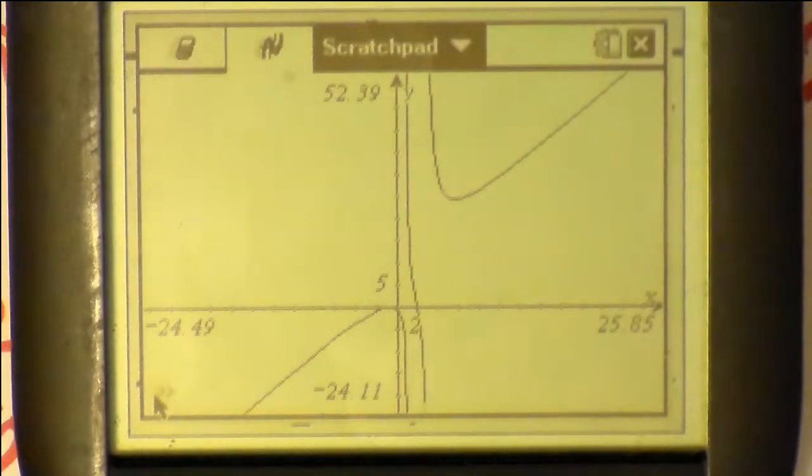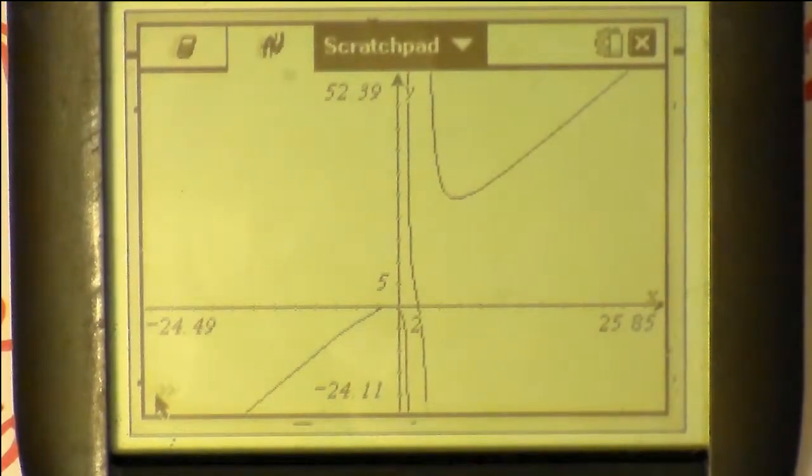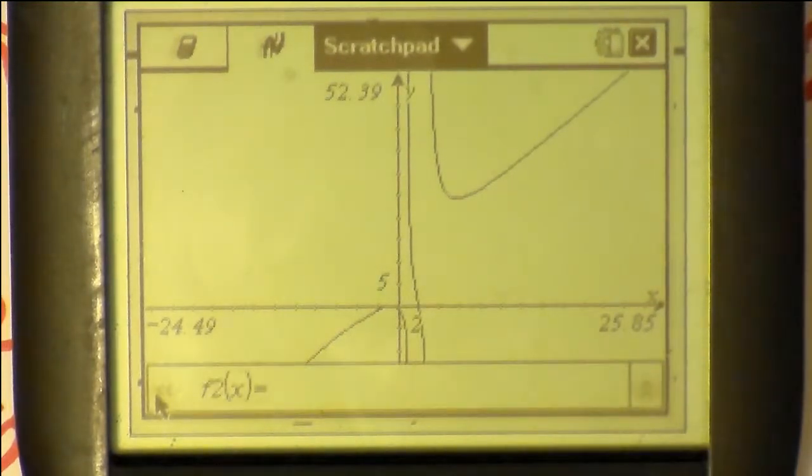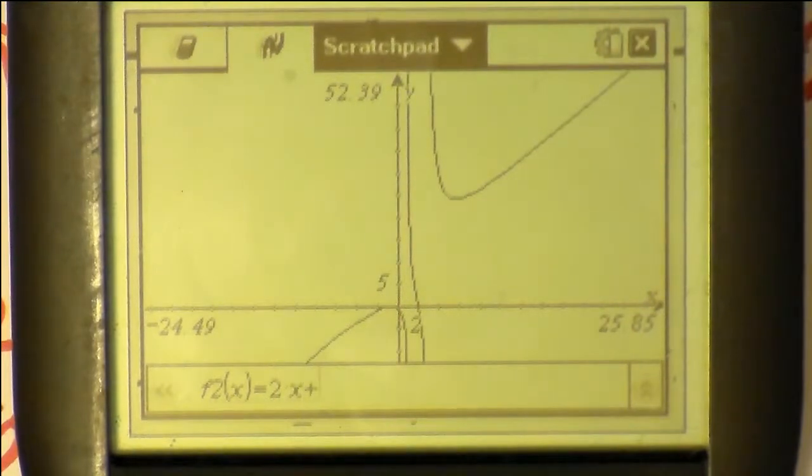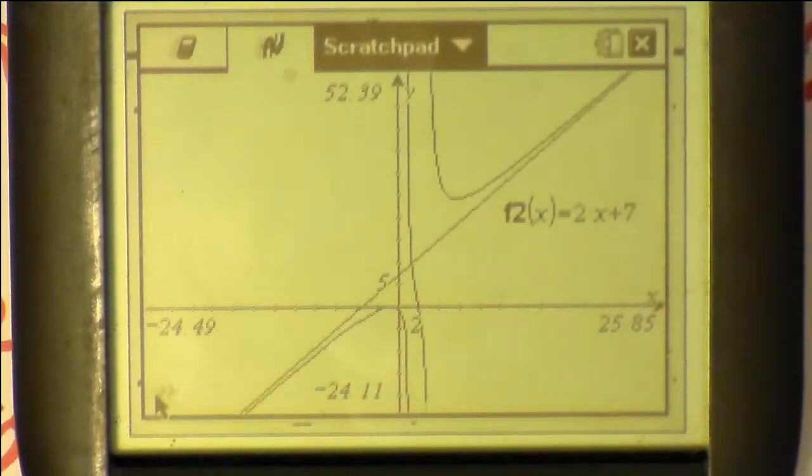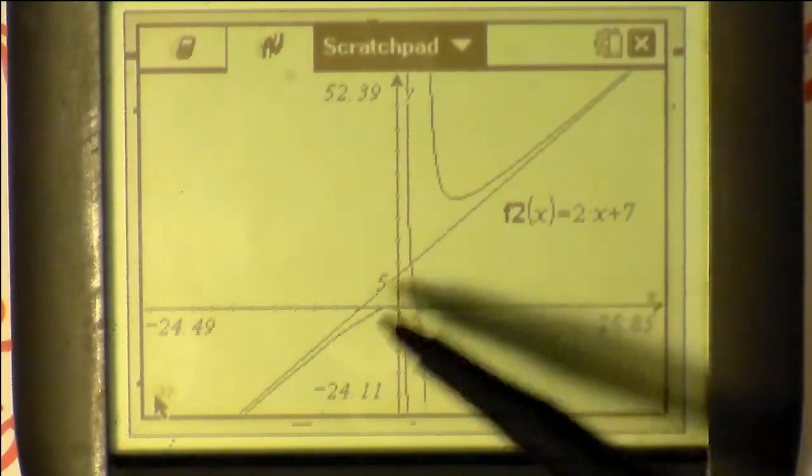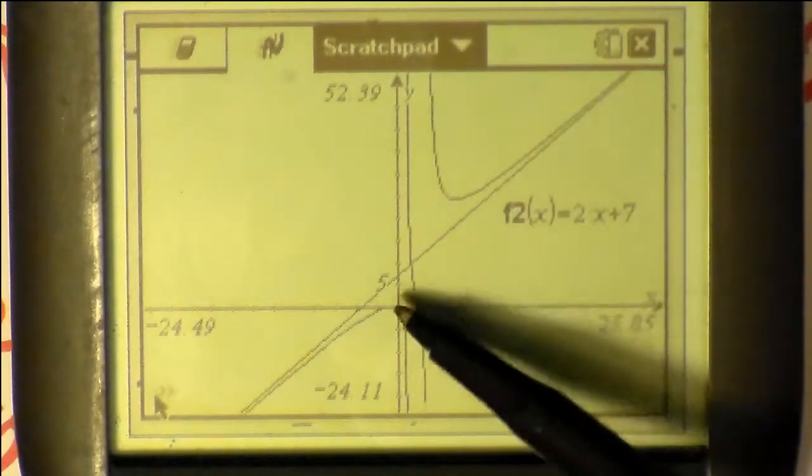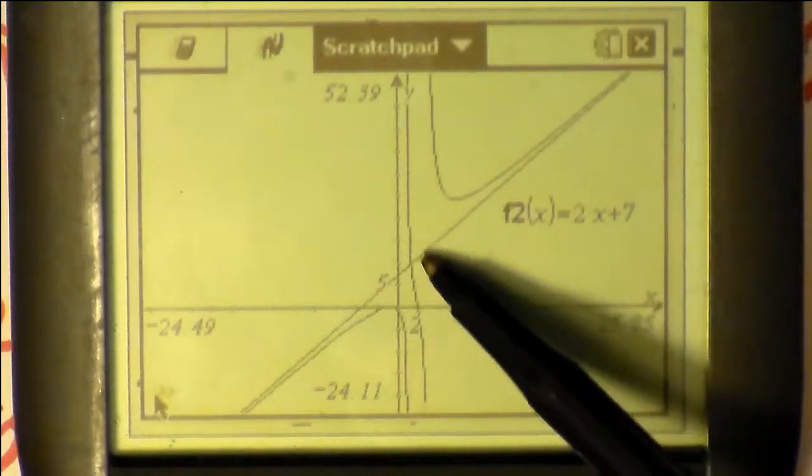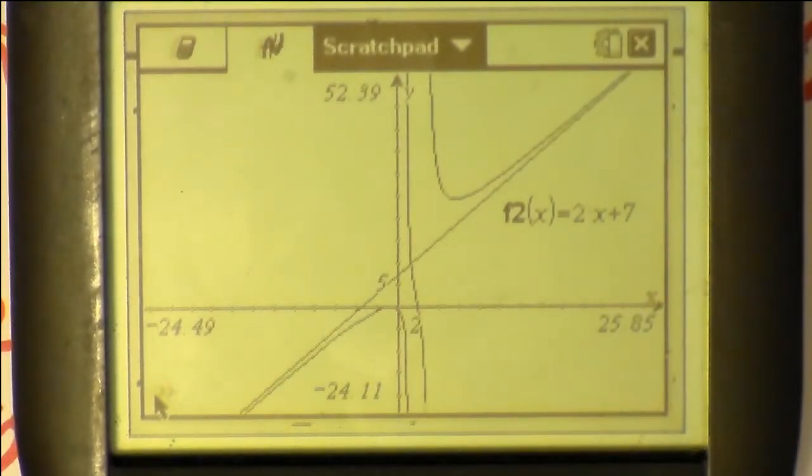Now we're going to take a look at the effect of adding our line and just showing that it does in fact look very much as though this is the oblique asymptote and as you can see here 2x plus 7 certainly looks like it as x gets very very large the asymptote gets closer and closer to it.